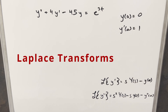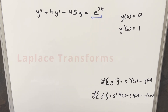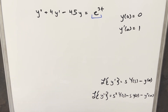Continuing on today with our Laplace transform playlist, we have here another differential equation. I just want to do one non-homogeneous case. Notice we don't have a zero here now, we've got e to the 3t. So for this one we've got y double prime plus 4y prime minus 45y equal to e to the 3t.